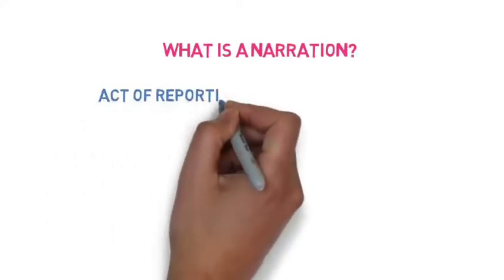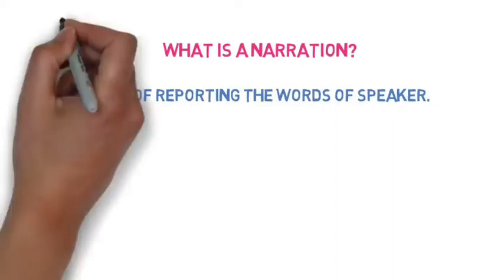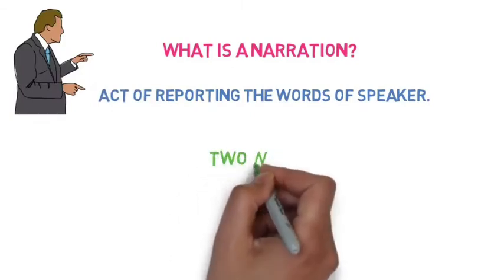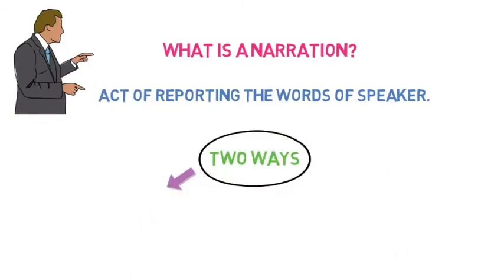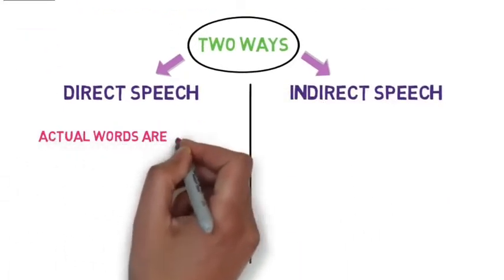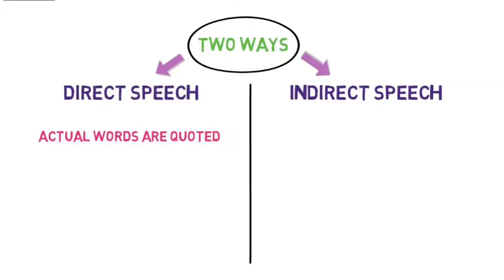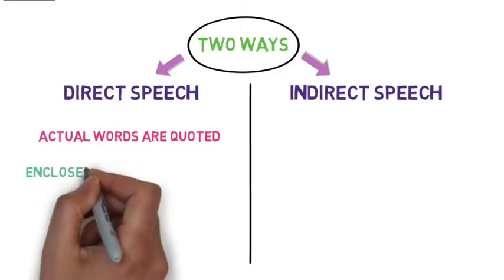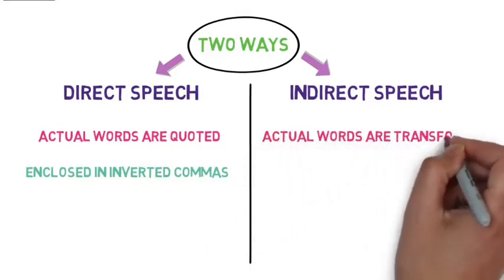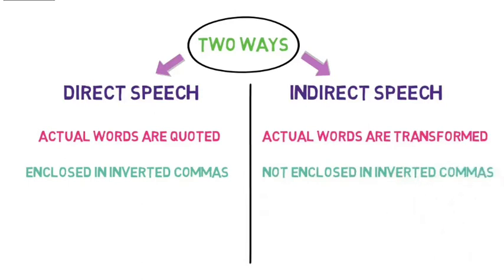Let's first quickly remember what we learnt in our previous video. Narration is the act of reporting the words of a speaker — how you are representing the way a person has spoken. There are two main ways of reporting the words of a speaker: first, direct speech, and second, indirect speech. In direct speech, the actual words of the speaker are quoted as-is without any change, and the exact words are enclosed in inverted commas or quotation marks. In indirect speech, the actual words of the speaker are transformed and not enclosed in inverted commas.